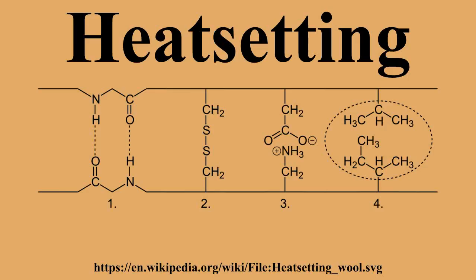The Power heat set process, formerly known as the SUSAN process, was developed in the early 1970s and was the first continuous heat setting system worldwide. The process was revolutionary in that it was the first system not operated with saturated steam and pressure, but with a superheated steam-air mix at atmospheric pressure. Using this innovative technology, completely new carpet collections were created. In the Power heat set process, the yarns and filaments oxidize slightly on the surface due to the existing oxygen in the surrounding atmosphere and the higher temperatures, and this capillary oxide film causes the finished carpet to be more stain-resistant.